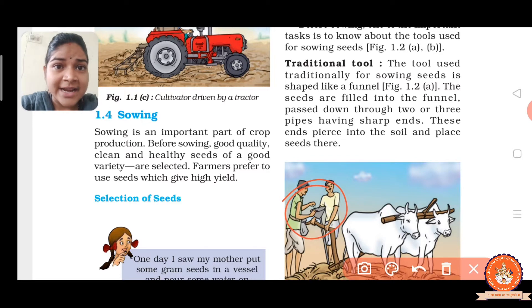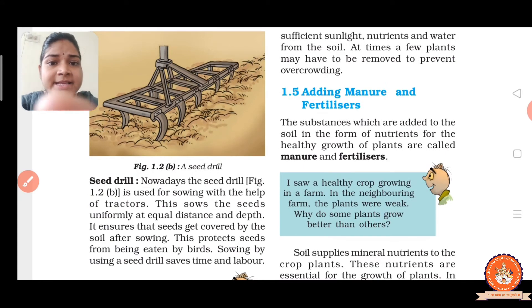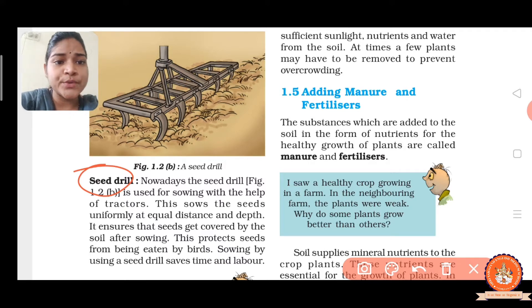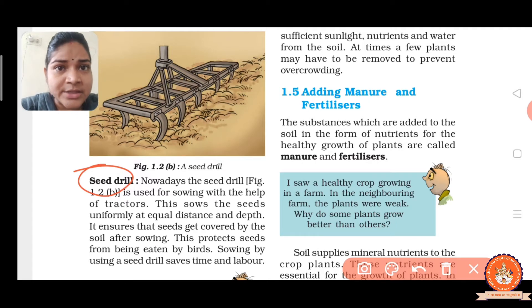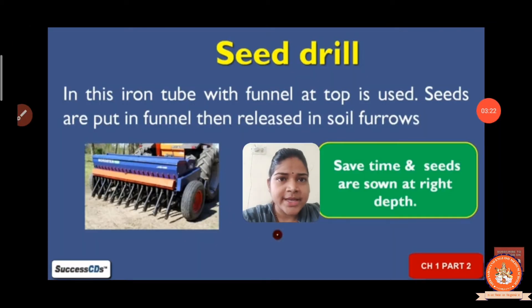But nowadays, technology has developed. That is why the seed drill technique is now used. The seed drill technique is connected with a tractor and is used for sowing with the help of the tractor. It saves time and labor. Now let us see the structure of the seed drill shown here.